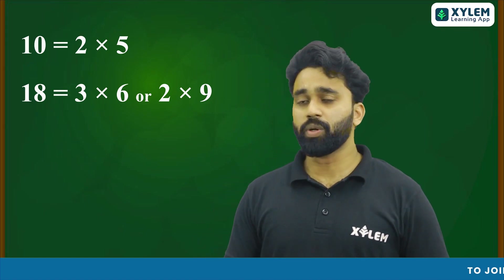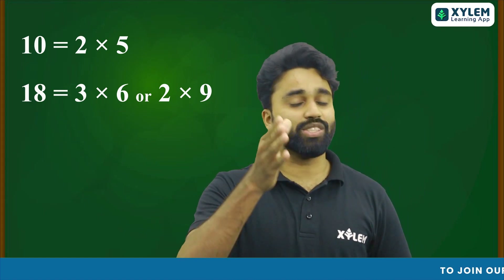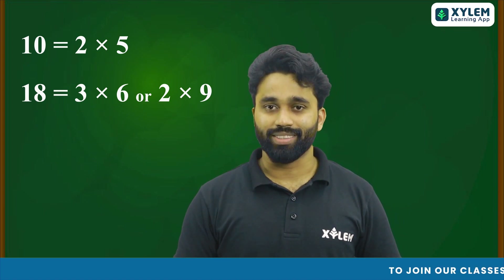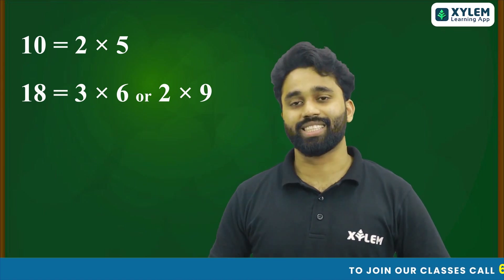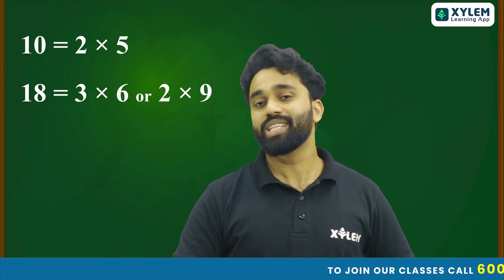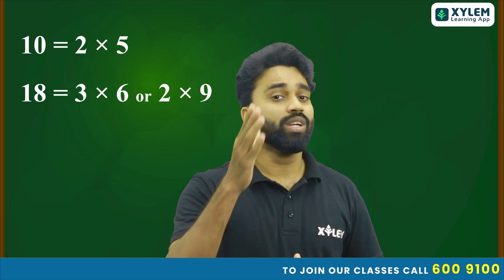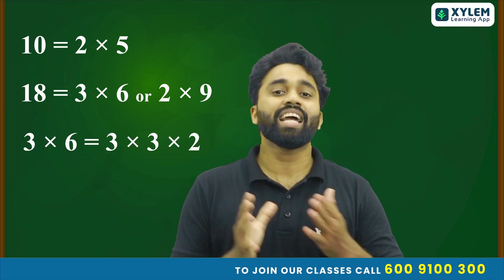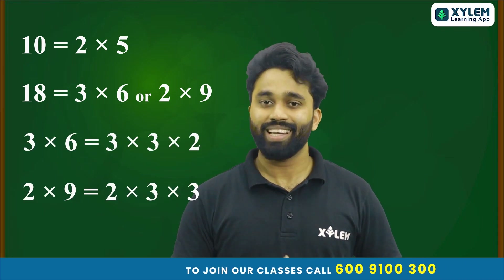When you take 3 into 6, 3 is a prime number but 6 is not. So we factorize 6 further into 3 and 2. Therefore 18 equals 3 into 3 into 2, and both 3 and 2 are prime numbers.